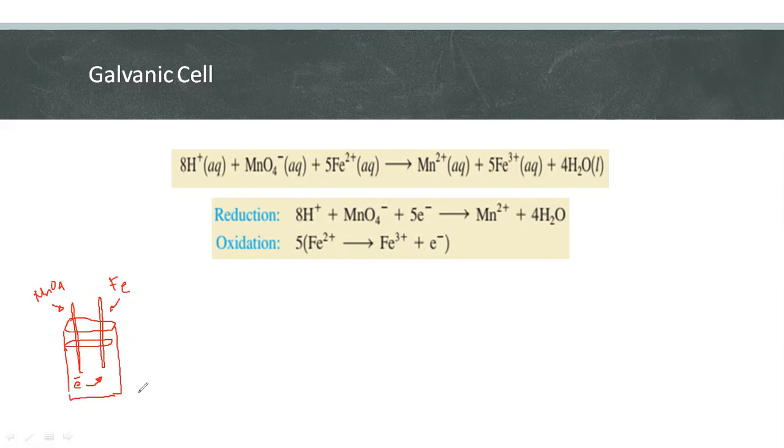To harness this energy, we have to separate the oxidizing agent and the reducing agent. We are going to separate permanganate and iron, then connect them by a wire.